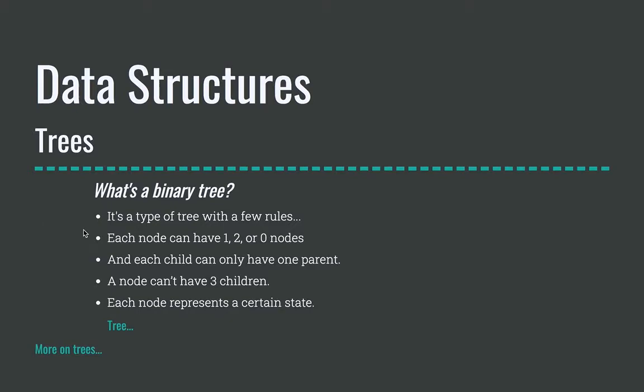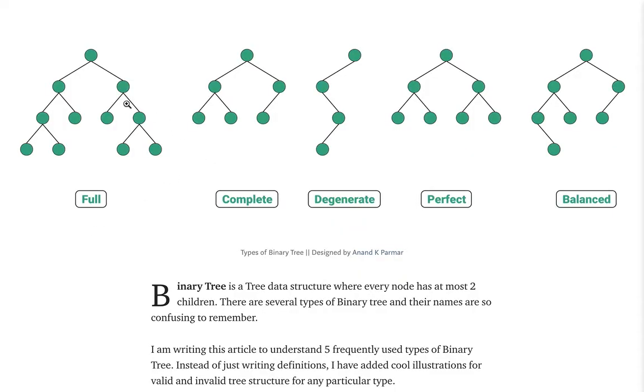But let's go to binary trees and let's talk about them. So what is a binary tree? It's a type of tree with a few rules. The rules being something like each node can have one, two or zero nodes as children. And each child can only have one parent. A node can't have three children. Each node represents a certain state. So let's take a look back at our tree right here.